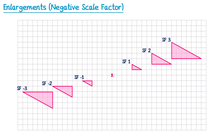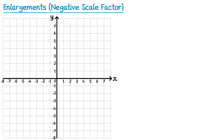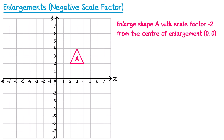Now let's look at some examples of enlarging shapes with a negative scale factor. We're given shape A and the question reads: enlarge shape A with scale factor negative 2 from the center of enlargement (0, 0). Just like a normal enlargement, we mark on the center first at (0, 0), then pick a point — the bottom left corner — and consider the journey from the center to that point. To get from the center to the green cross I go 2 to the right and 2 up.